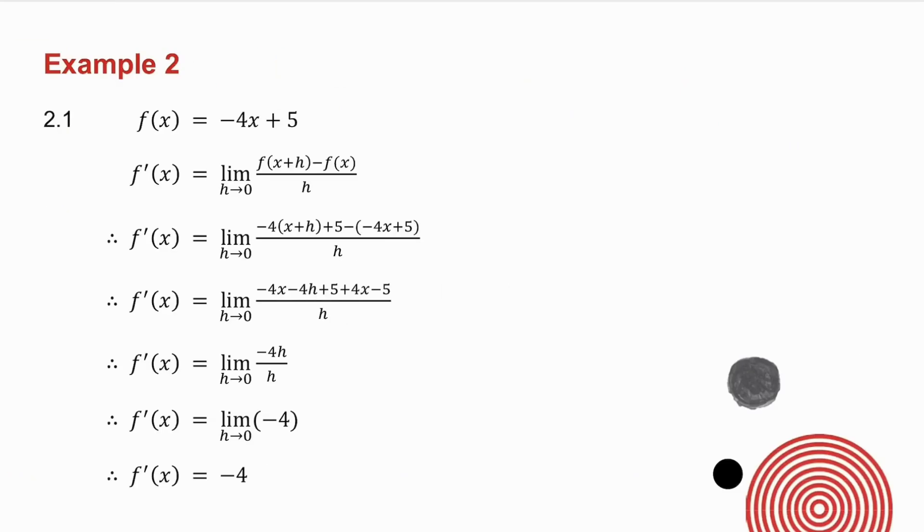In 2.1, they give you f of x equals minus 4x plus 5. So what I have is the following. f of x plus h means in place of the x, I put x plus h. So I get that. Then I must minus f of x, which I have there. What I now do is I multiply the brackets out on the top, collect together like terms.